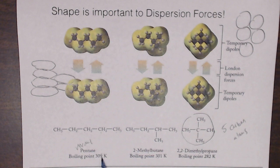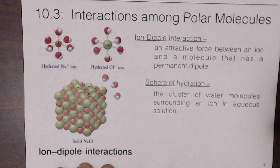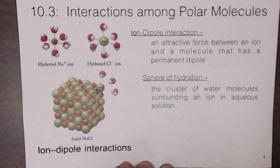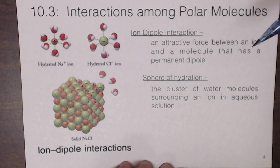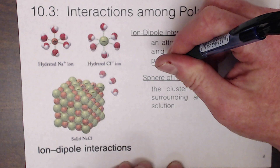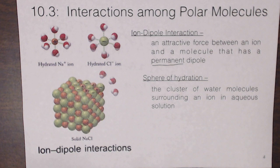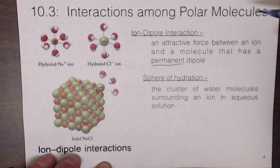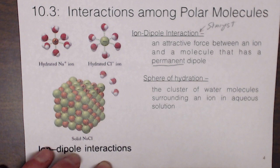Moving into section 10.3, we consider interactions among polar molecules. The ion-dipole interaction is an attractive force between an ion and a molecule with a permanent dipole moment — not an induced dipole. This is actually the strongest of all intermolecular force interactions.